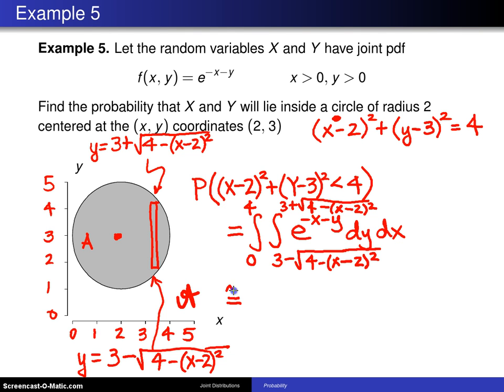Now that is not a pleasant integral to calculate. I did it by using Maple and the result turned out to be to 4 decimal points, 0.2028. So the probability of falling in this circle that is shaded here is 0.2028.